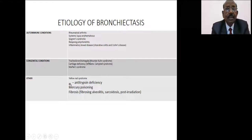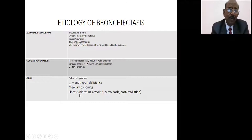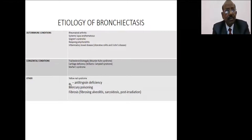Congenital anomalies like tracheobronchomegaly — known as Mounier-Kuhn syndrome — cartilage deficiency known as Williams-Campbell syndrome, and Marfan syndrome may be associated with bronchiectasis. Other reasons include Yellow Nail syndrome, alpha-1 antitrypsin deficiency, and even fibrosis such as IPF, sarcoidosis, and post-irradiation can lead to bronchiectatic changes.